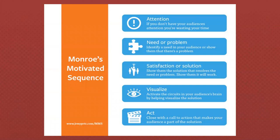Monroe's motivated sequence: first, get their attention — they don't care until you have their attention. Then you identify the need of your audience, or show them that there is a problem. Then you show them what the solution is and why it will work — here is your problem or your need, and we can solve this by doing this thing.